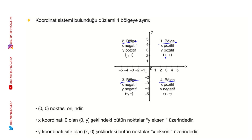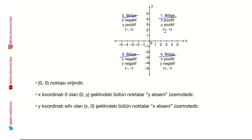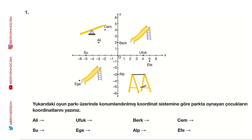İkinci bölgede x negatif, y pozitiftir. Üçüncü bölgede her ikisi de negatiftir. Dördüncü bölgede x pozitif, y negatif tarafa denk gelmektedir. Y ekseninin üzerinde olanlar (x,0) ile, x ekseninin üzerinde olanlar (0,y) ile gösterilir.